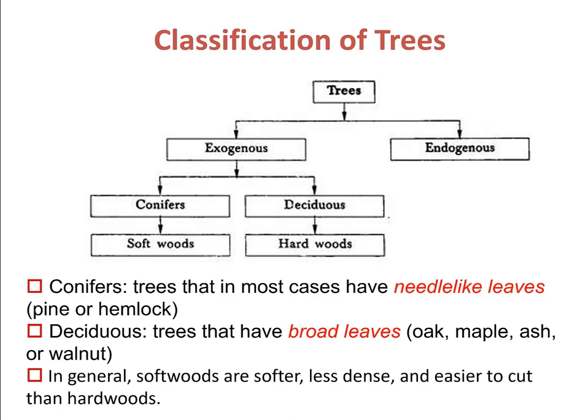Exogenous trees are broadly classified as deciduous trees and conifers. A deciduous tree is a tree whose leaves fall off every year, either due to winter cold or a dry season — the word 'deciduous' actually means 'to fall off.' Conifers are also called evergreen trees. An evergreen tree, although it does lose its leaves and needles throughout the year, is constantly growing new leaves and needles and so it remains green year round.